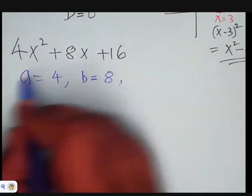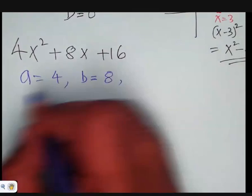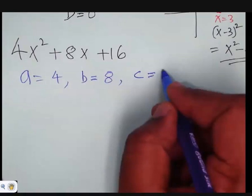And your b is 8. You can take a greatest common factor, but I'm not doing it because we're checking if it is a perfect square trinomial. We are not factorizing.